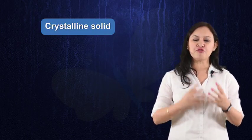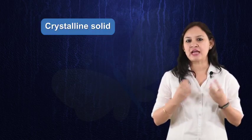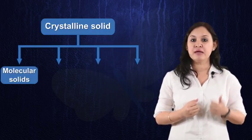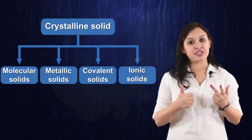Based on the intermolecular forces attracting between them, the crystalline solids are categorized into four types: molecular solids, metallic solids, covalent solids, and ionic solids.